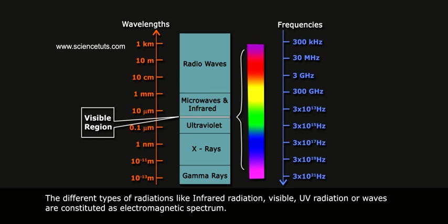The different types of radiations, like infrared radiation, visible UV radiation or waves, are constituted as electromagnetic spectrum.